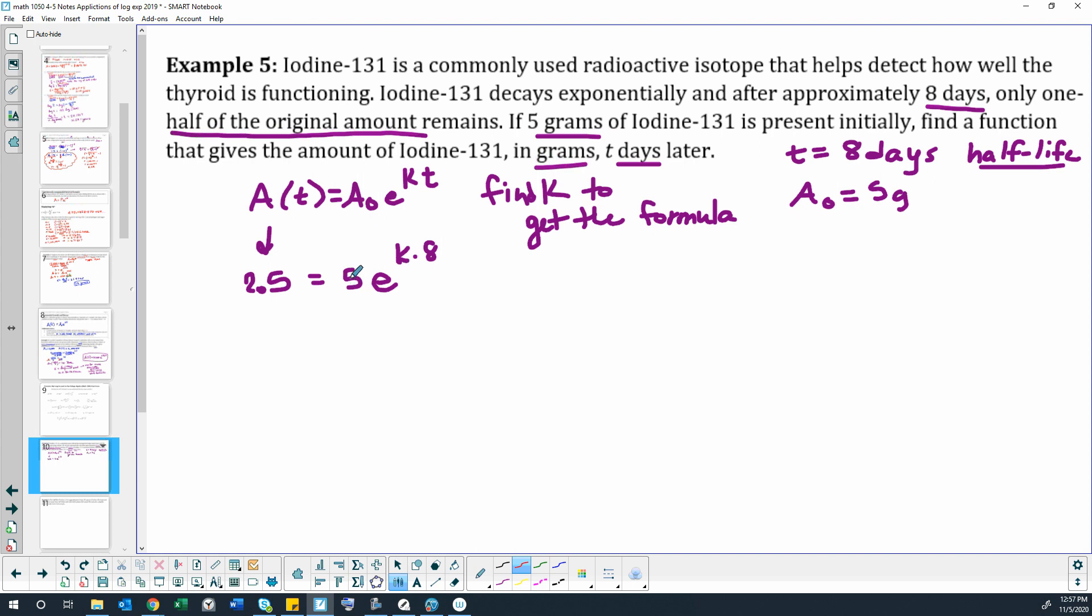We do this isolation of the exponential part of things and what do we get? We get a one half, just like when we were doubling we got two and we were tripling we got three. Now we're finding the half life so we're getting half.